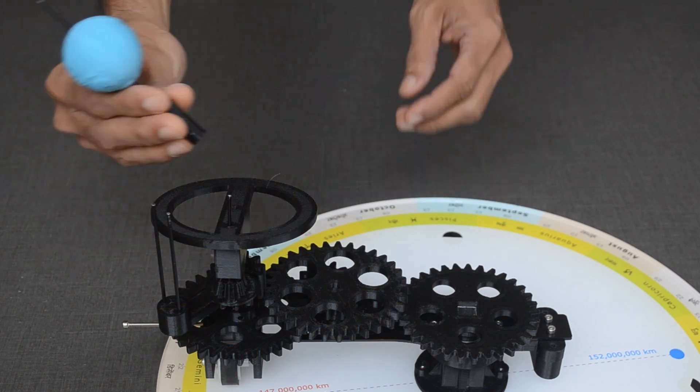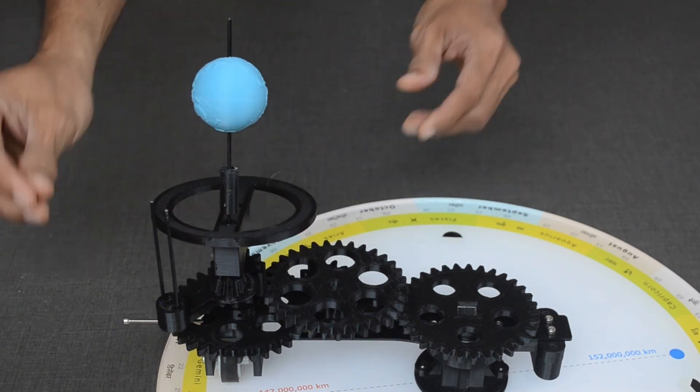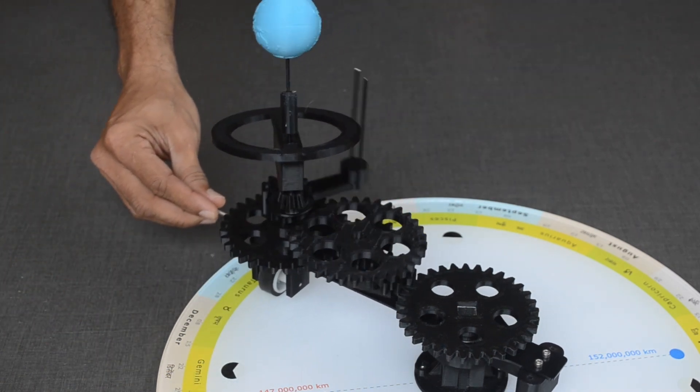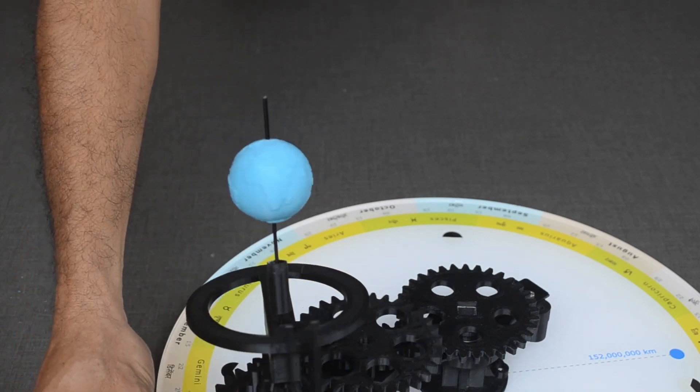Bigger Earth can be inserted in this small black rod. It should rotate when we move the handle like this.